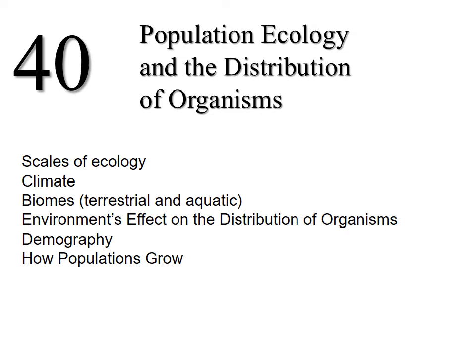Chapter 40 is the first chapter in our ecology unit and it's a pretty broad introduction to ecology and distribution of organisms. We'll talk about the different scales, we'll talk about climate, we'll talk a little bit about biomes, but largely I'm going to give you a supplemental PowerPoint because people tend to do okay on those and typically I don't lecture over the terrestrial biomes. Then we'll talk about distribution of organisms, demography, and how populations grow.